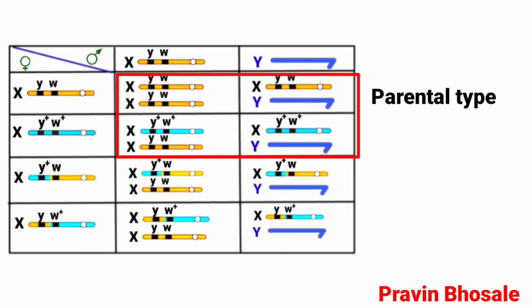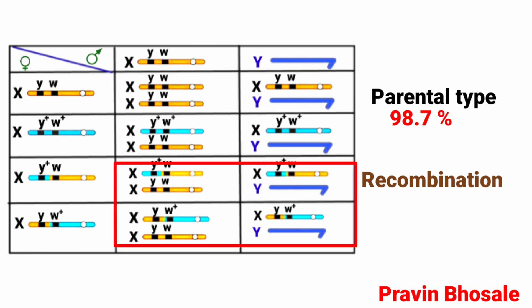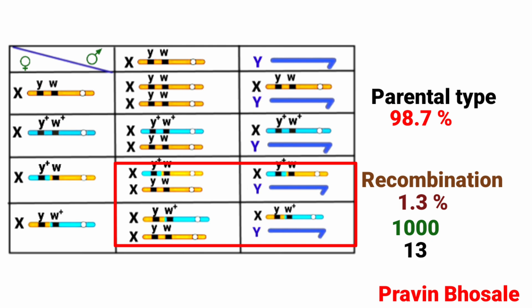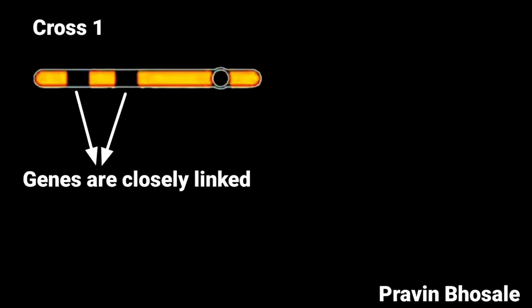So the parental type will have a percentage of 98.7% — that is, out of 1000, 987 will be parental type. Recombination will be 1.3%, meaning out of 1000, 13 will be of the recombination type. So in Cross 1, we have seen that if genes are closely linked, there will be less recombination — that is 1.3%.